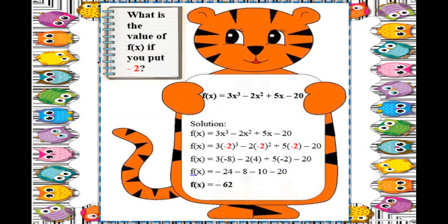Let's have another example. What is the value of f of x if you put negative 2? Before, we substituted a positive value; now we have a negative one. Let's see if there's a difference in how we multiply.